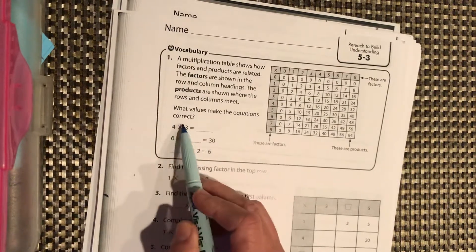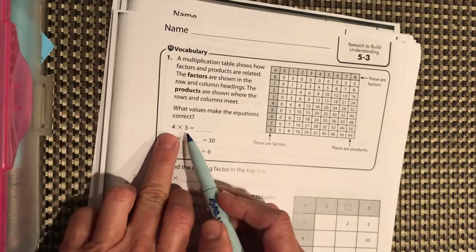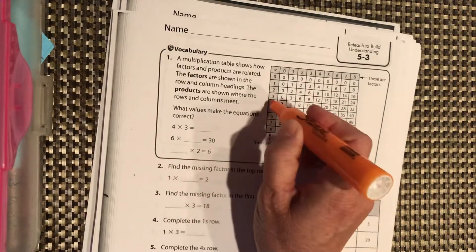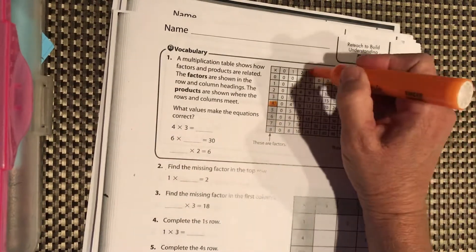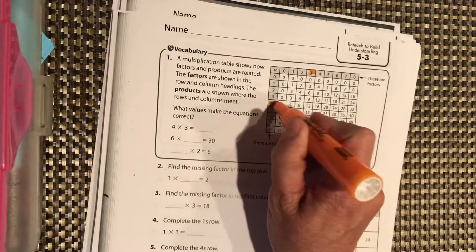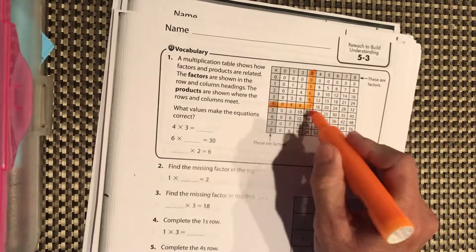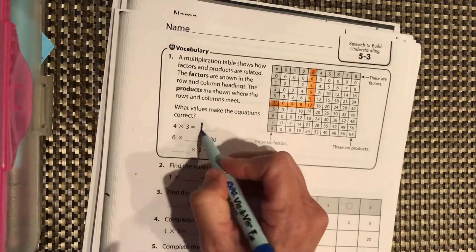So what values make these equations correct? We have 4 times 3. If we take 4 right here and 3, and we see where they meet, we should come right to 12. So 4 times 3 is 12.